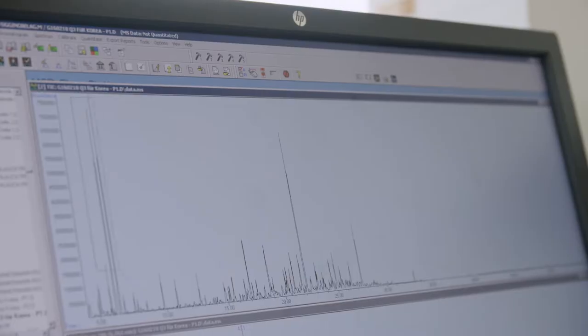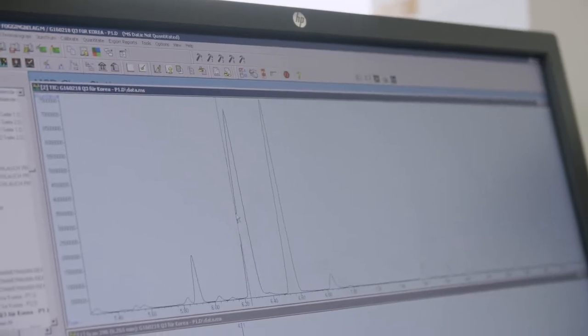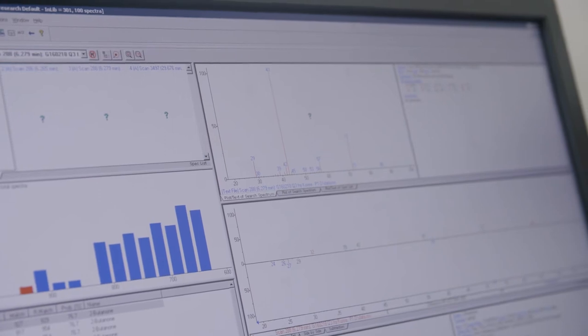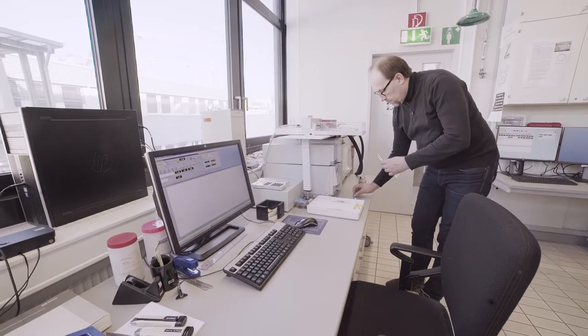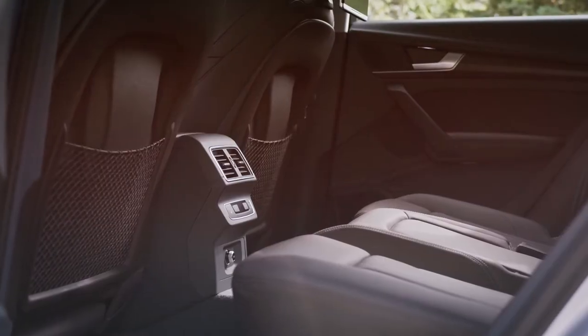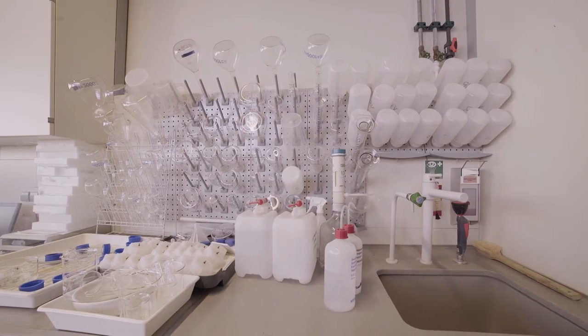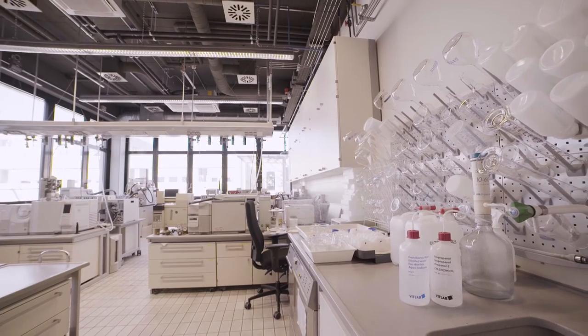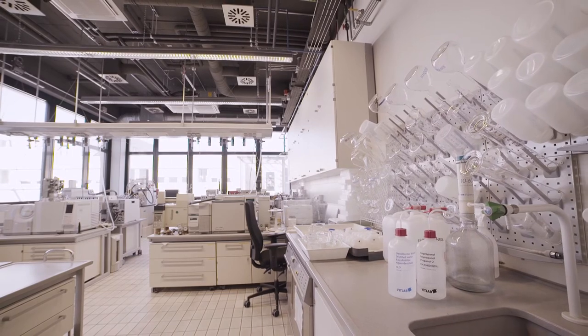A so-called chromatogram then shows the chemical ingredients that have been filtered out. Each peak represents a substance that was found inside the component chamber. If the values are exceeded, the vehicle parts are modified. We simply ensure that there are no substances present that might pose certain health hazards or smell unpleasant. And we also make sure that the overall level of chemical substances inside the vehicle remains as low as possible.